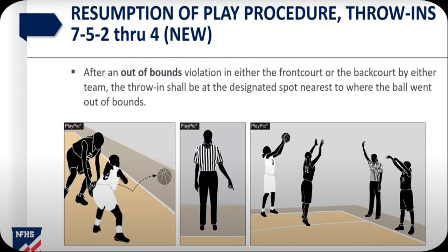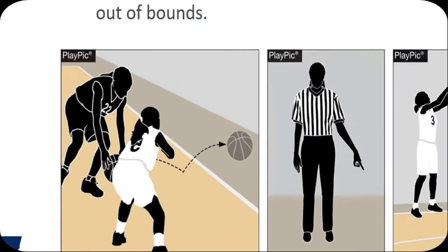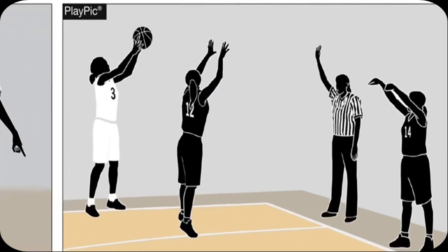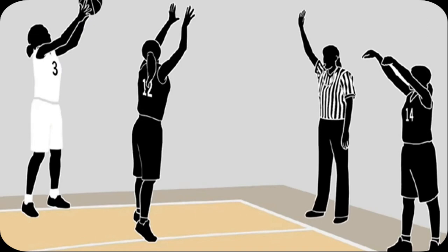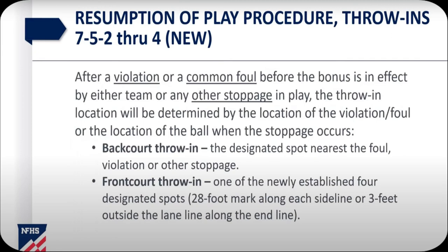After an out-of-bounds violation in either the front court or the backcourt by either team, the throw-in shall be at the designated spot nearest where the ball went out of bounds. This clarifies exactly what we have always done. After a violation or a common foul before the bonus is in effect by either team, or any other stoppage in play, the throw-in location will be determined by the location of the violation, foul, or the location of the ball when the stoppage occurs. Backcourt throw-in: the designated spot nearest the foul, violation, or other stoppage. Front court throw-in: one of the newly established four designated spots — 28-foot mark along each sideline or three feet outside the lane line along the inline.